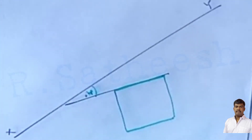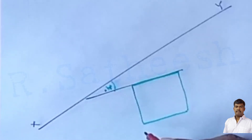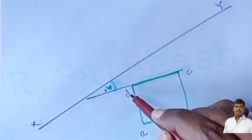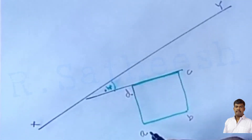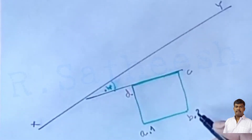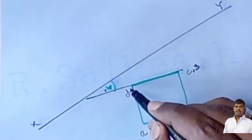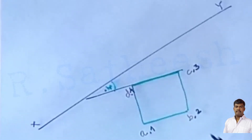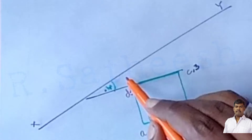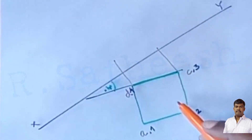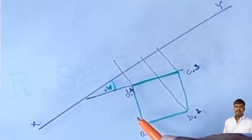A cube consists of six square faces. Assign letters: in the top view, a, b, c, and d for the base, and 1, 2, 3, and 4 for the top face. Draw the projection lines from the top view up to the front view.